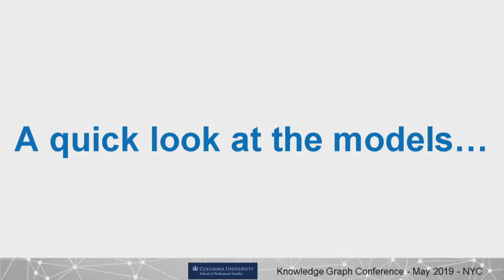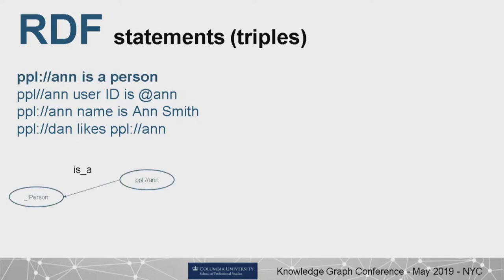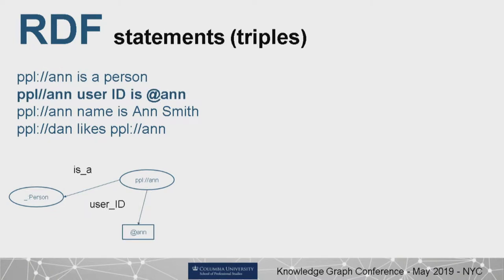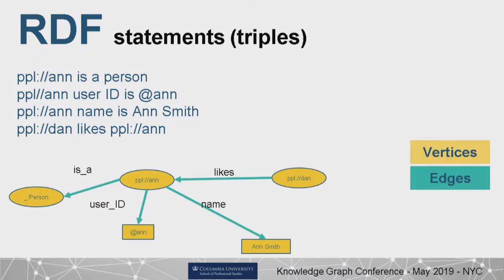Let's look under the hood at the models. RDF is based on the notion of a logical statement — what's called a triple: subject, predicate, object. If you chain assertions, that forms a graph. So stating this is a person creates two vertices and an edge; stating the same individual has an ID creates another edge. You build a graph by chaining these statements, with this underlying atomic decomposition of every single statement in your data.